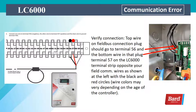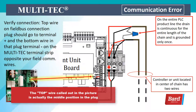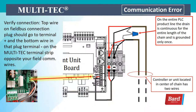Wire colors on the PLC may vary depending on the age of the controller. If you're working with a Multi-tech, the top wire on the field bus connection plug should go to the terminal marked positive, and the bottom wire to the terminal marked negative on the Multi-tech terminal strip — opposite your field connection wiring. On the entire PLC product line, the drain is continuous for the entire length of the chain and is grounded only once. The controller or unit located in the center of the chain has two wires; the ends only have one wire entering the unit or controller.